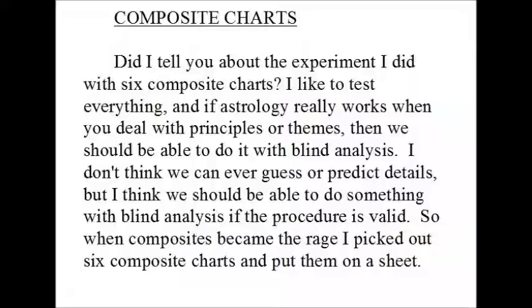A composite chart is a chart of midpoints. You take the midpoint of the two people's suns, and that becomes the sun in the new chart. The midpoint between the two moons becomes the moon in the new chart. The midpoint between the mercuries becomes mercury, and so on.